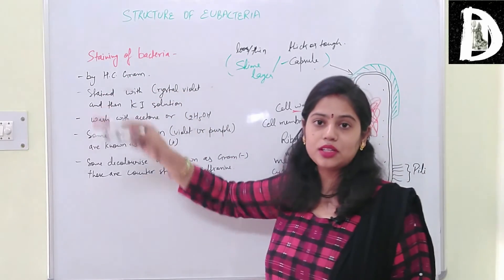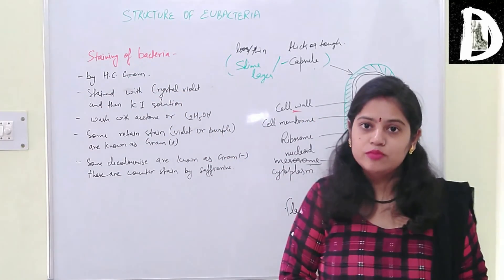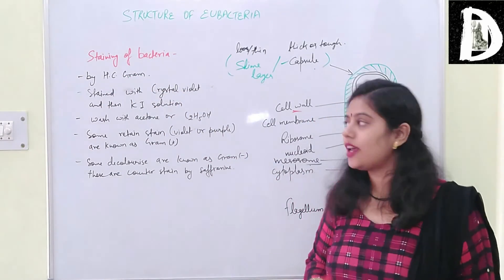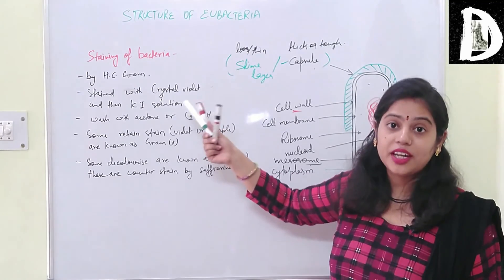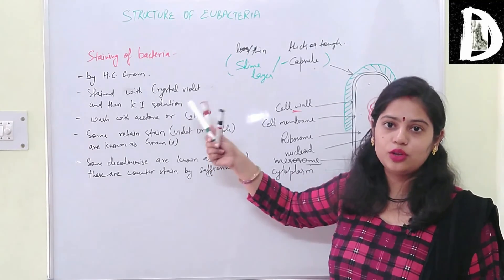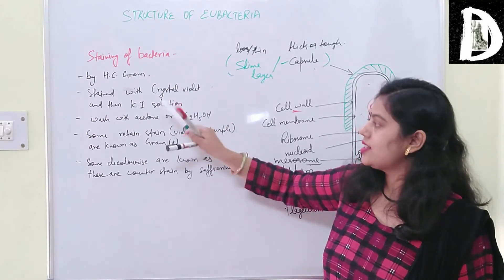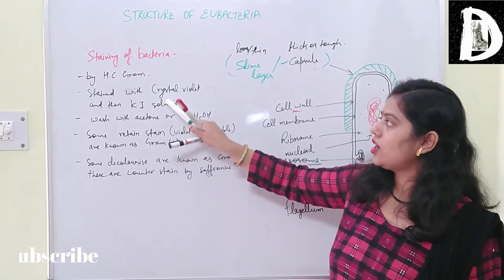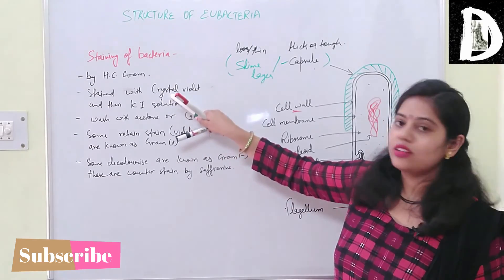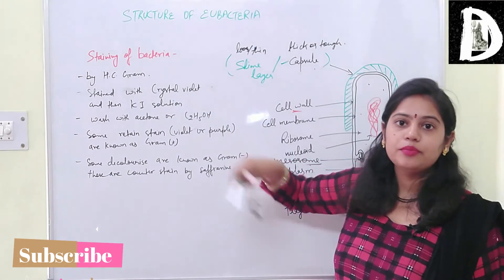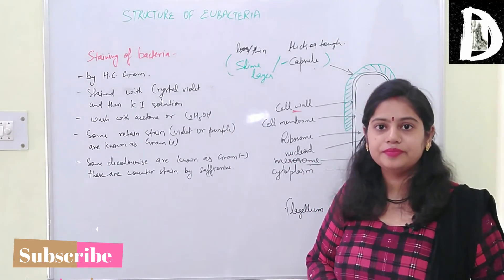So this is the main procedure for gram staining bacteria. The stain is called gram stain because it was first used by Hans Christian Gram. The actual stain used is crystal violet with potassium iodide solution.